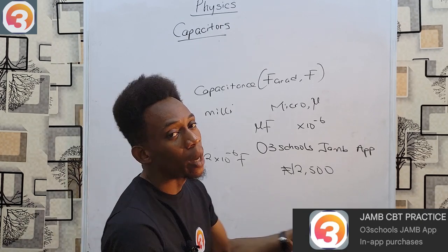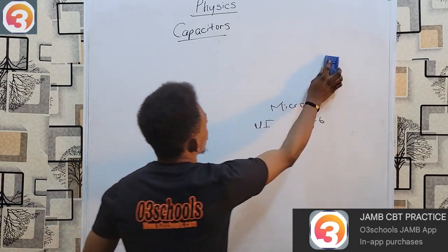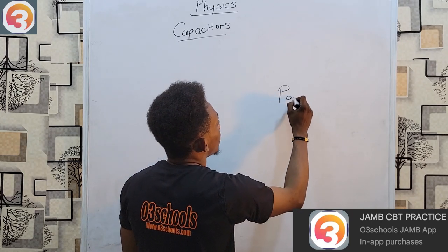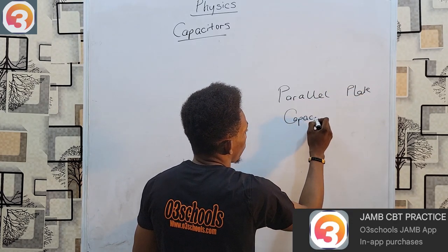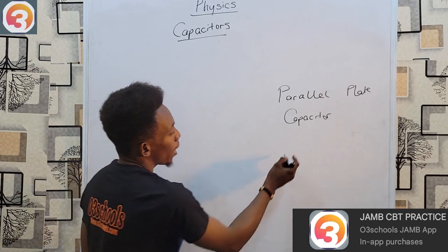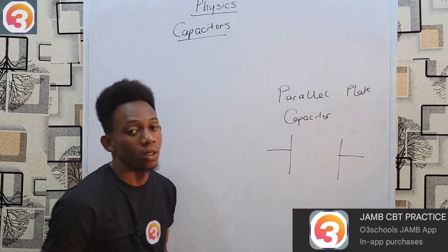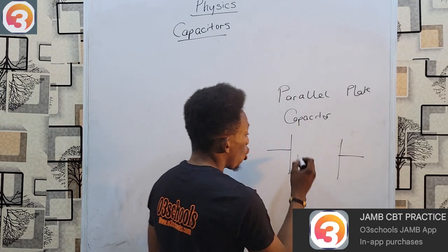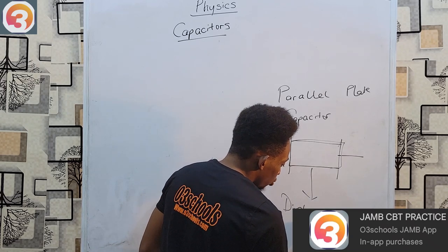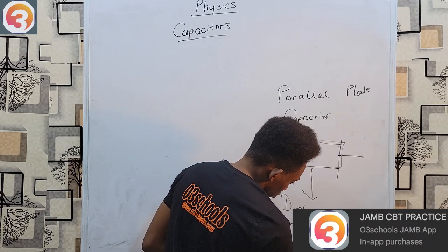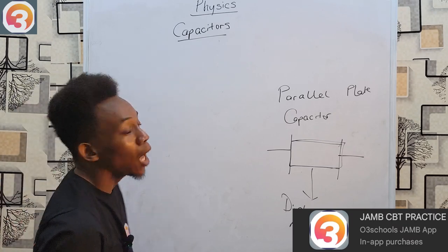Now, what are the factors that affect the capacitance of a capacitor? At your JAMB level, the type of capacitor studied is usually referred to as the parallel plate capacitor. A parallel plate capacitor simply means we have two metallic plates that are not touching each other — they are separated by either air or a non-conductor, which is referred to in this situation as a dielectric material.